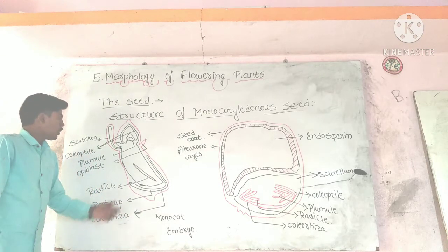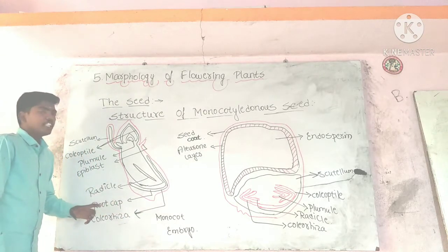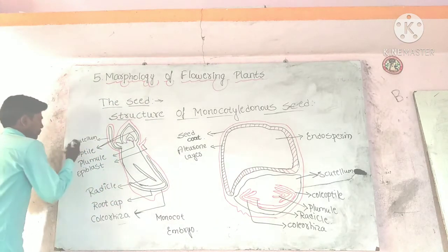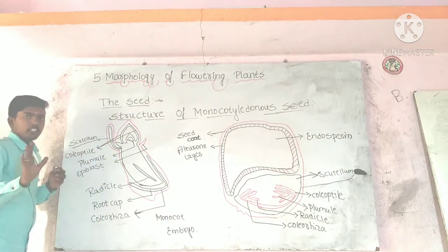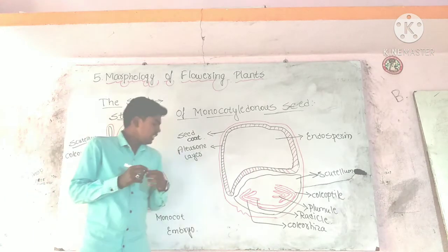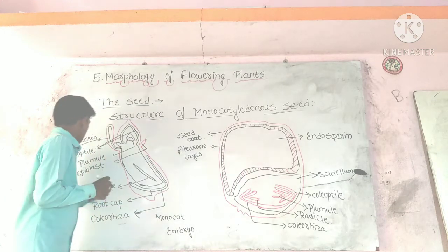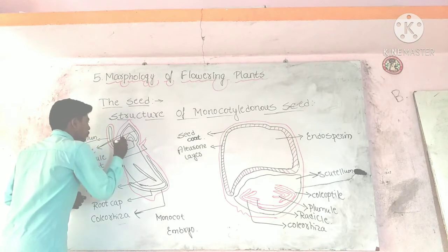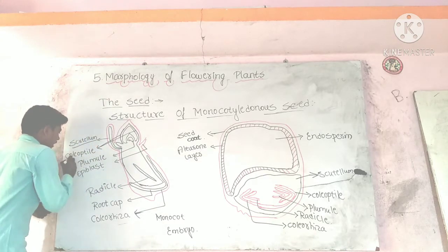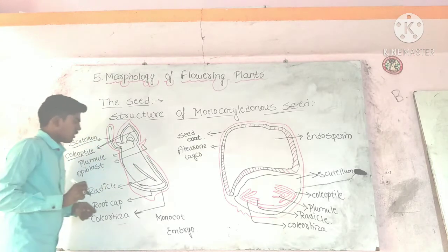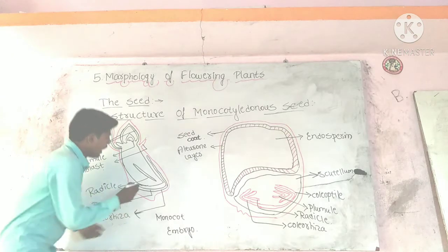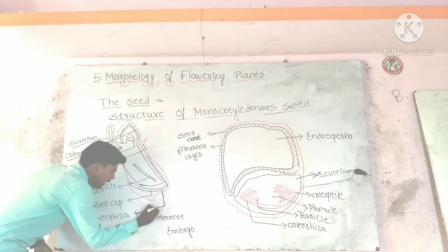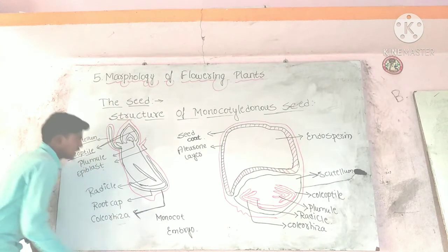The monocot embryo consists of a single cotyledon called scutellum. The plumule is covered by a sheath called coleoptile. The radicle and root cap are covered by a sheath called coleorhiza.